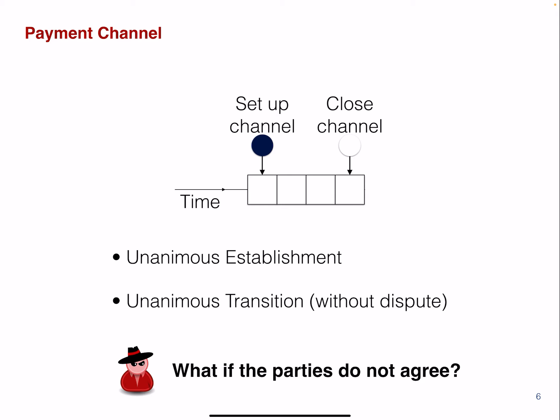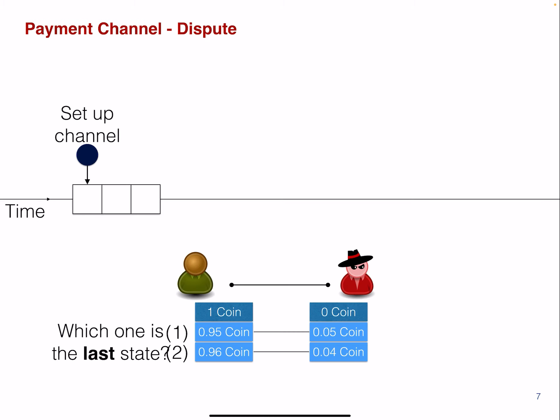So but what if the parties do not agree? And let's be frank, always happens that parties don't agree. So let's go through this example here. So again, as before, we have a channel set up here. And we have the blockchain. So there are three blocks that are being mined. And here is the channel was opened here by node A to node B.